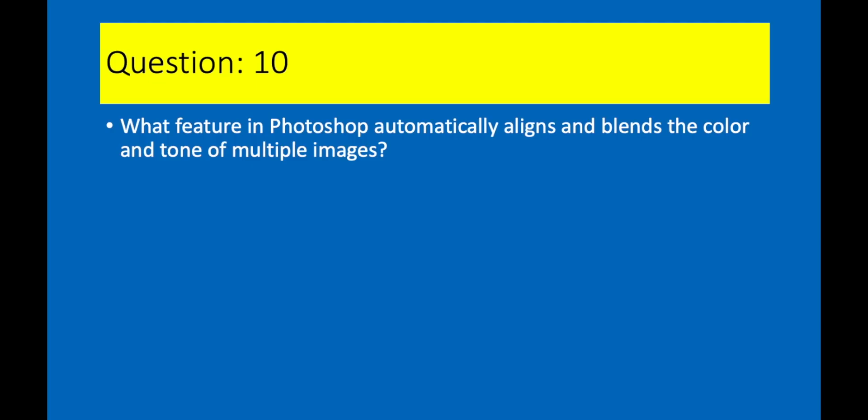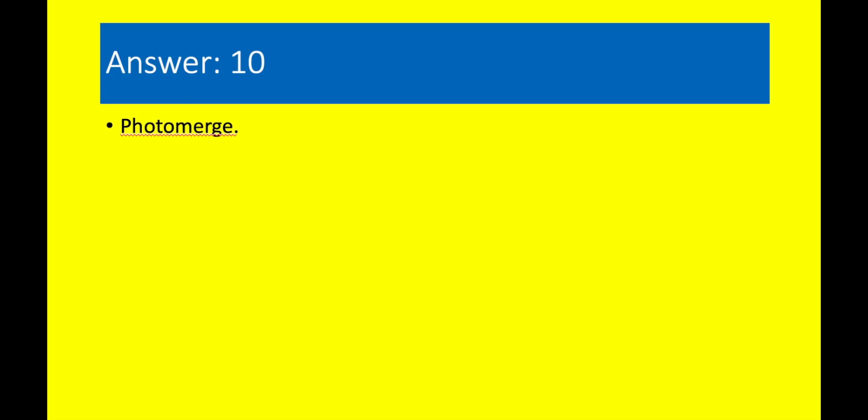Question 10. What feature in Photoshop automatically aligns and blends the color and tone of multiple images? Answer 10. Photo Merge.